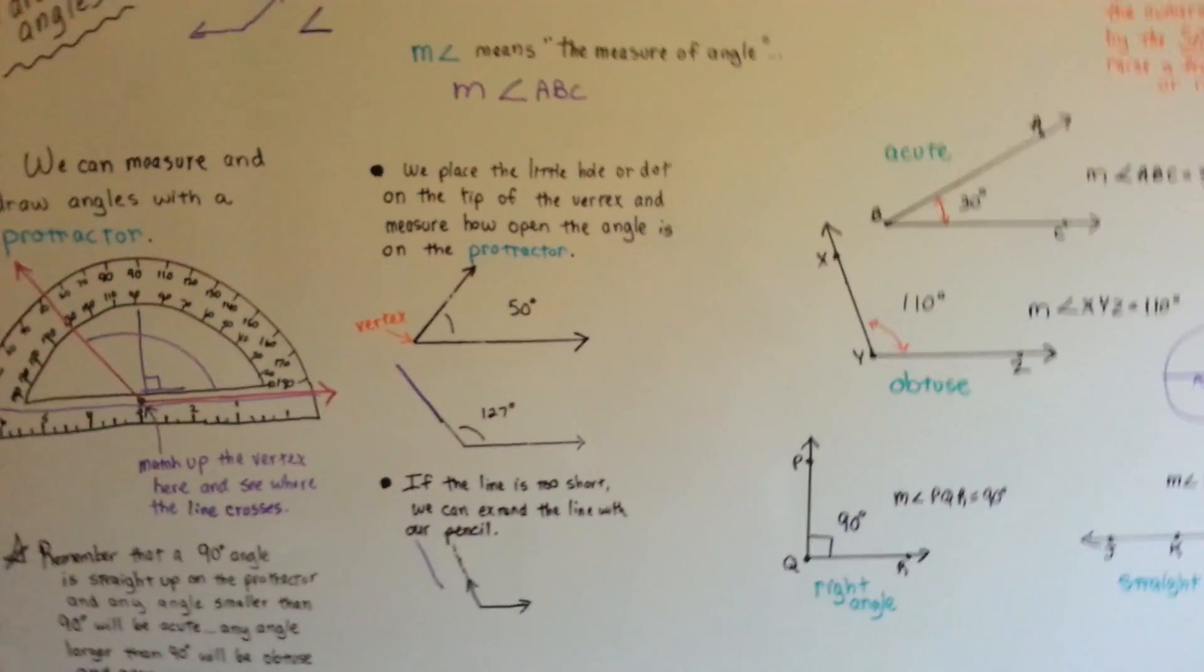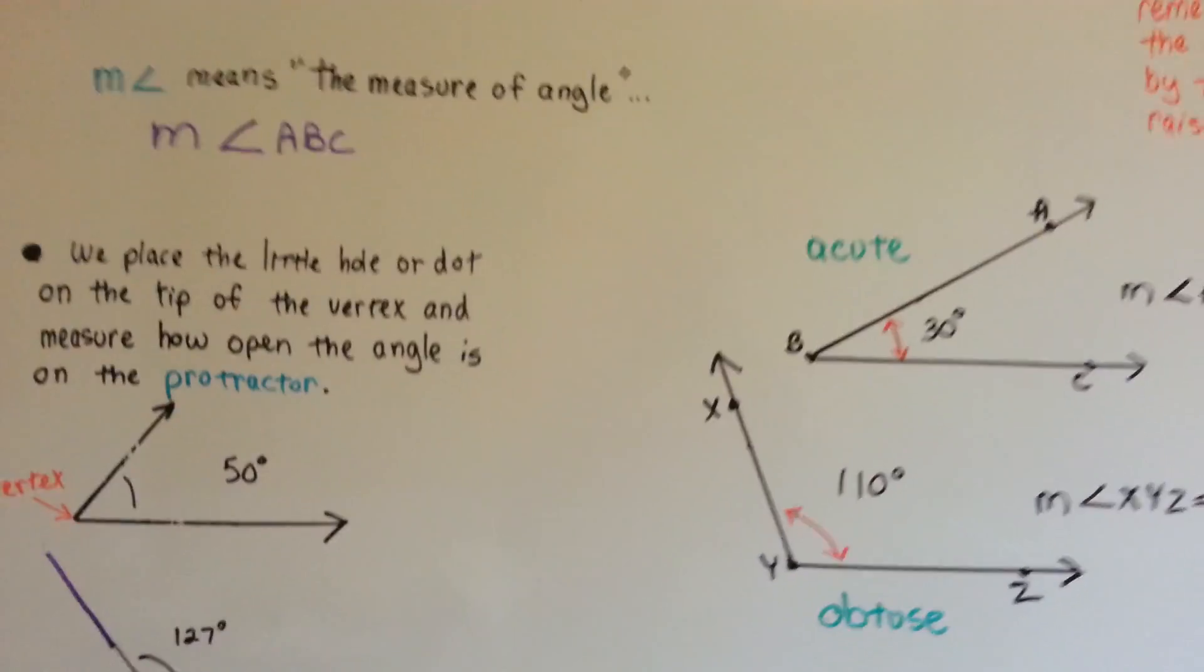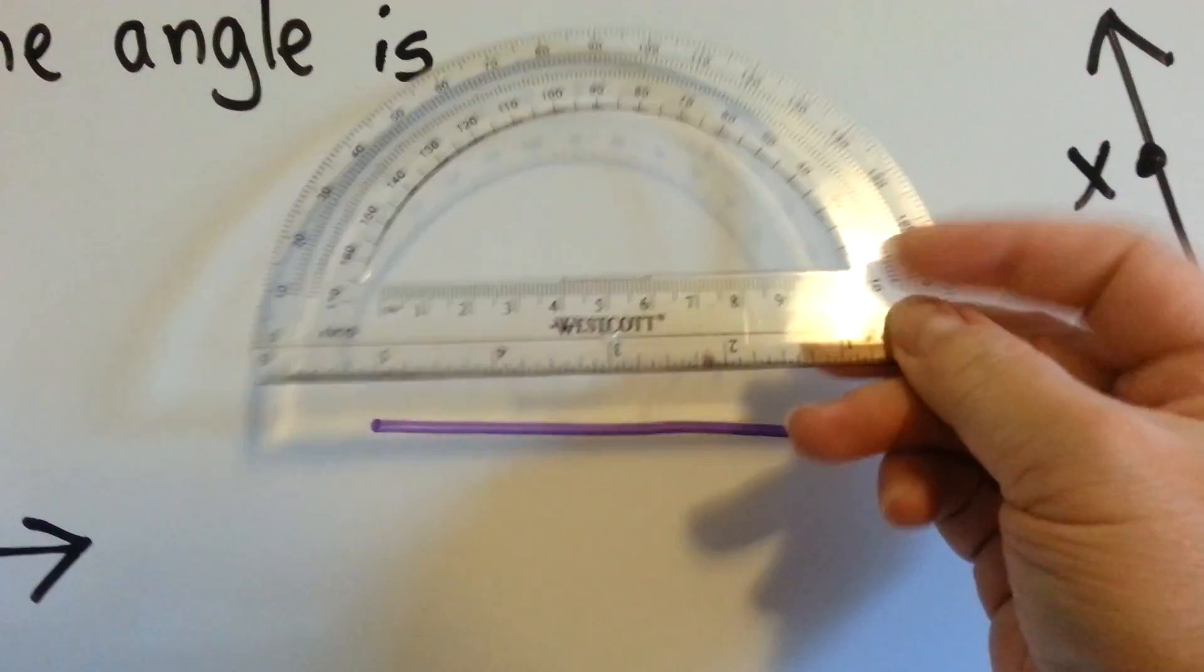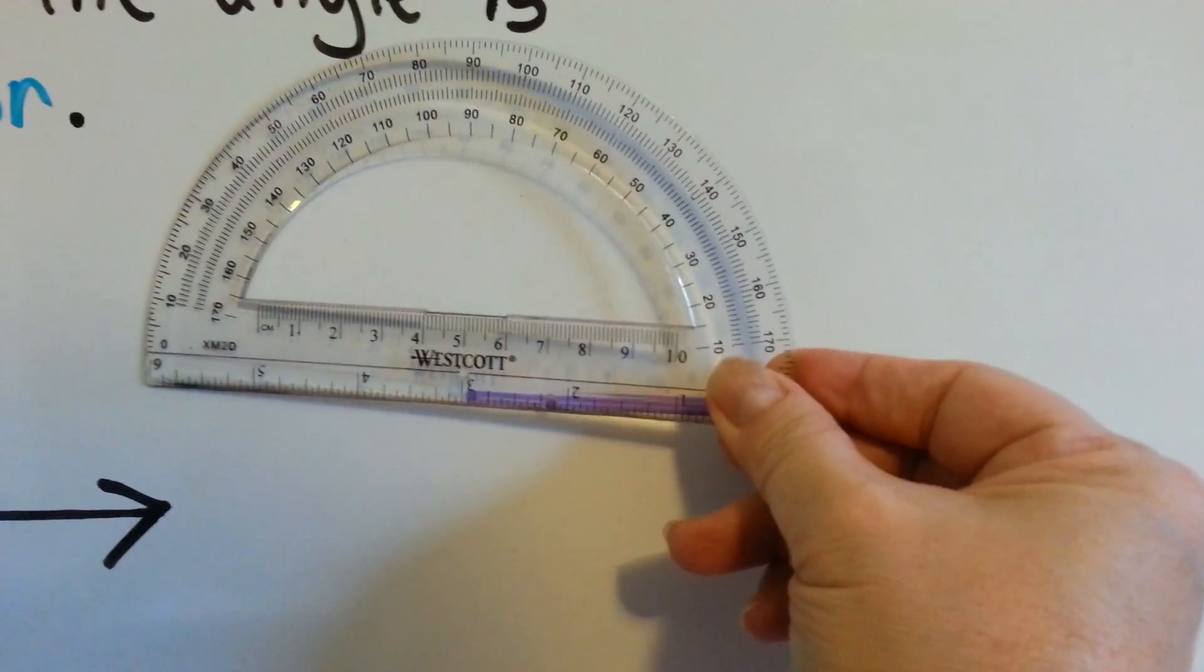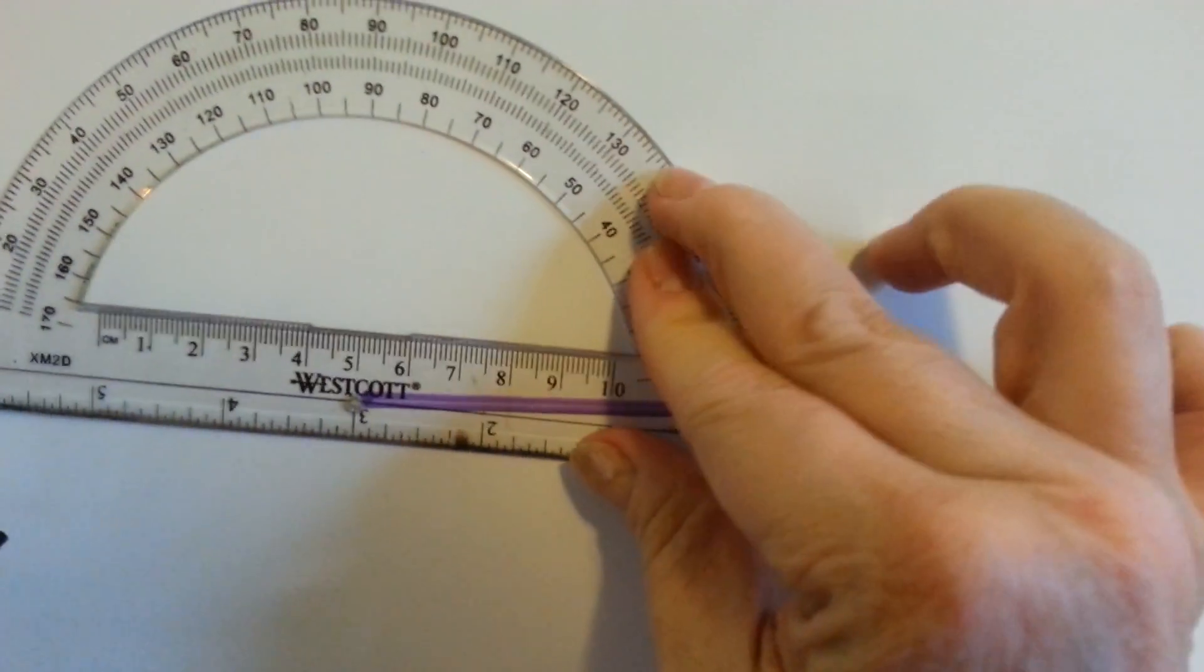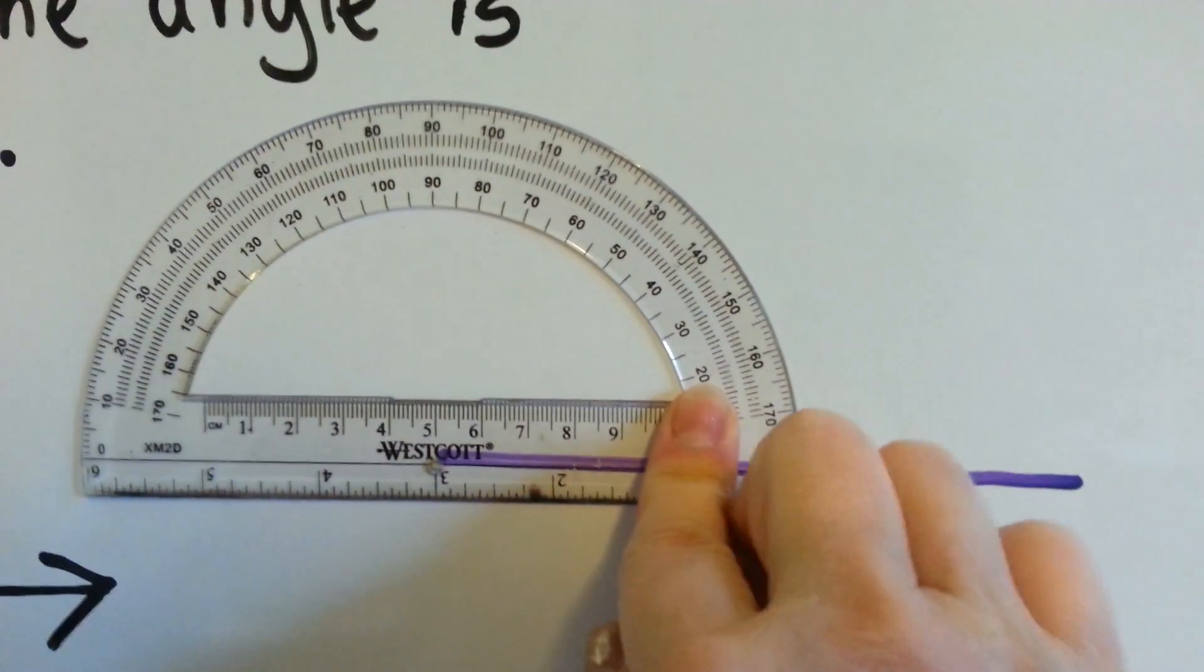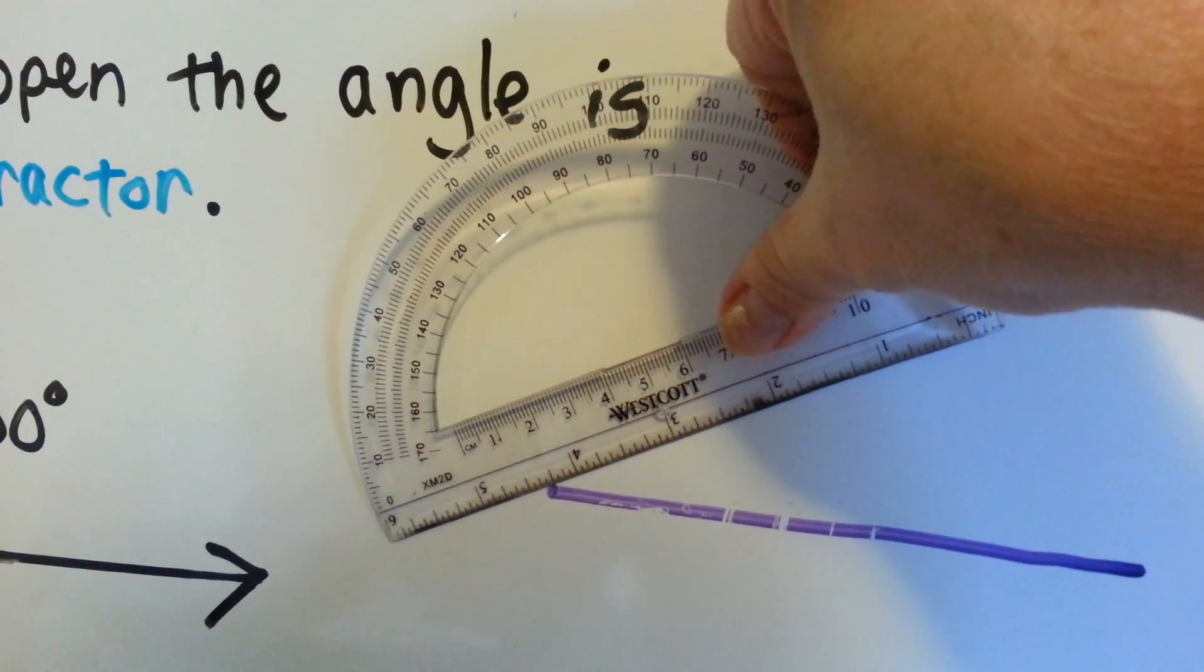If someone said draw an angle that is 30 degrees, you would start with a straight line, and then you would take your protractor and line it up on the straight line at this line right here underneath the word Westcott. And you would line it up with the vertex on that line, and then you would see where 30 is. If I line this up, we can see 30 is right there. You put a dot there. And then once your dot is there, then you take your protractor like this and line it up along the dot, and you draw your line.